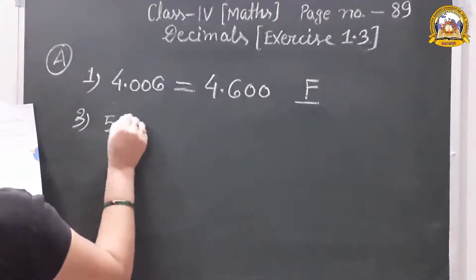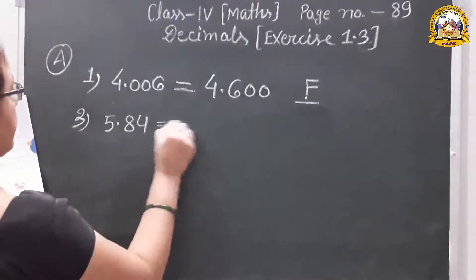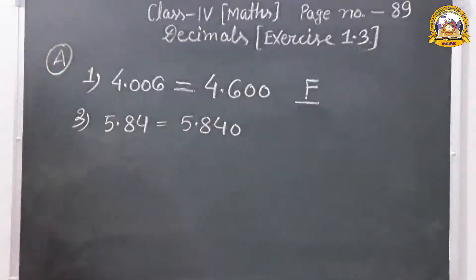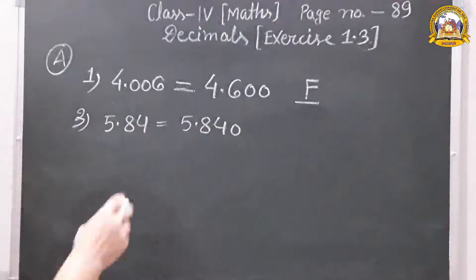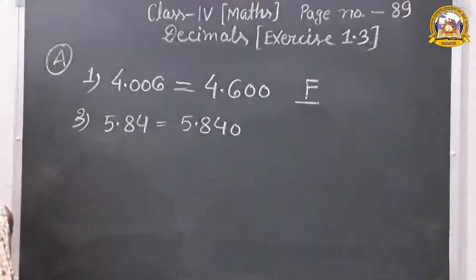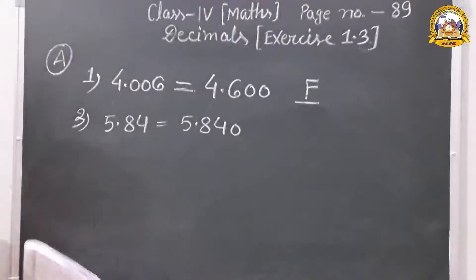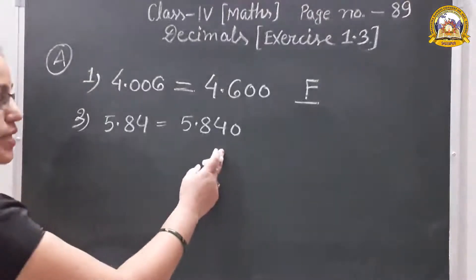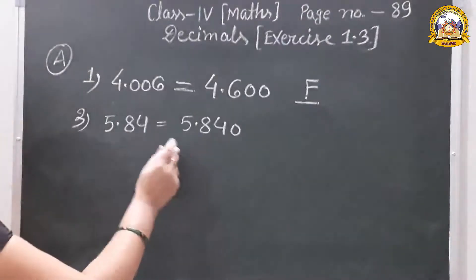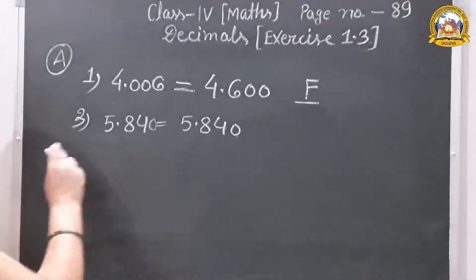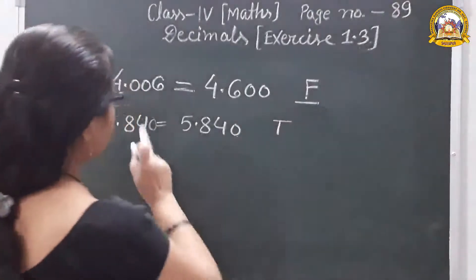Question number three: 5.84 is equal to 5.840. As I told you, we can add or remove zeros at the end of a decimal number. So both are equal, because we are just adding a zero at the end. It is true.